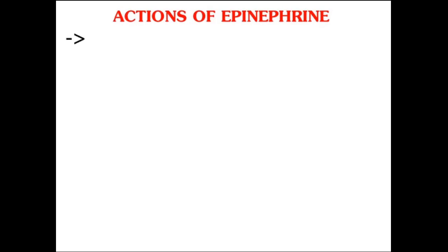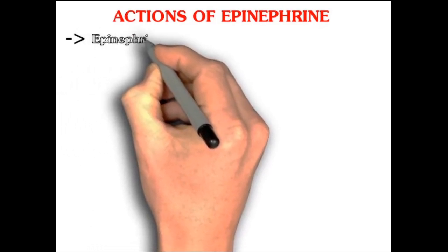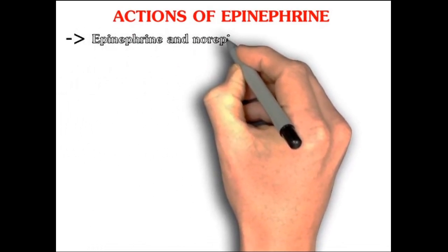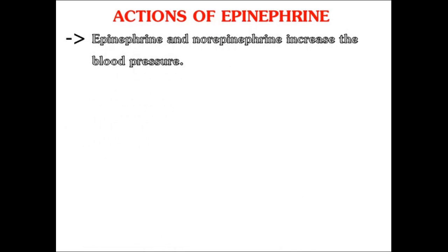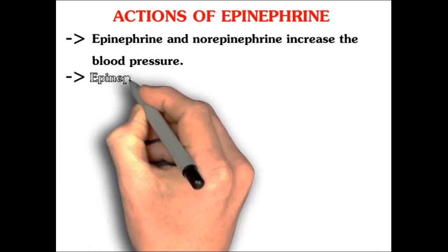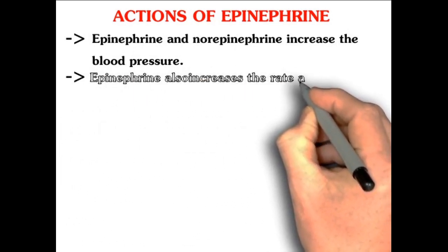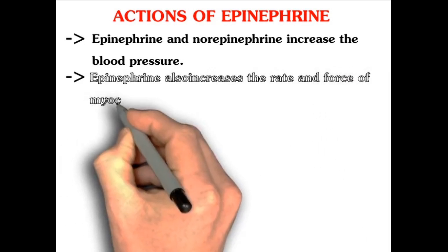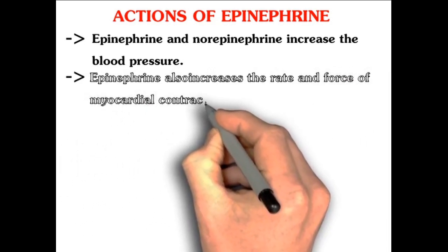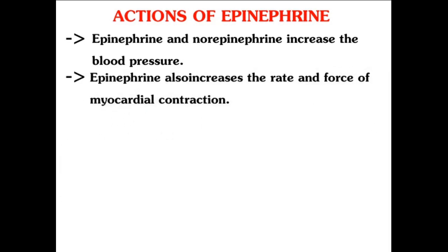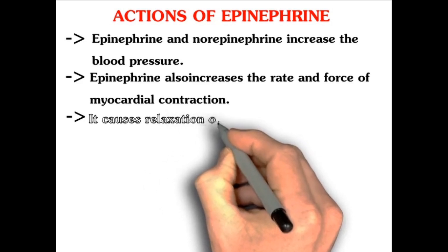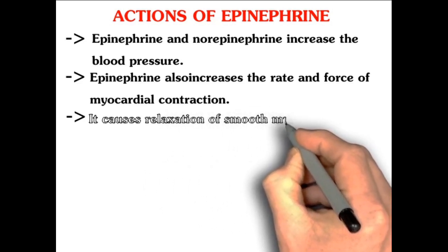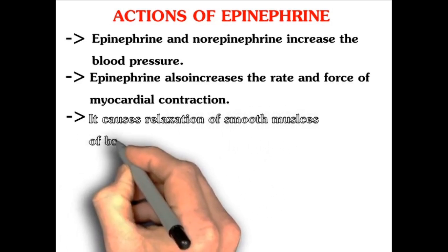Now we'll see the actions of epinephrine. Epinephrine and norepinephrine increase blood pressure. Epinephrine also increases the rate and force of myocardial contraction. It causes relaxation of smooth muscle of the bronchi.